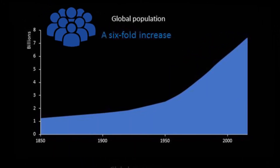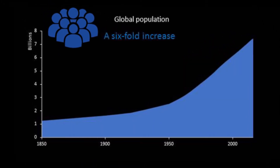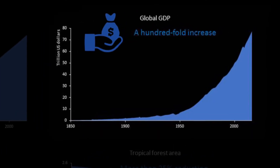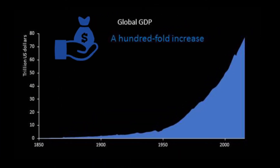If we look at human population over the last 150 years, it's increased about six-fold. As population has increased, society has developed and transformed in many countries of the world, and a metric we often use to describe that progress is GDP. We've seen that global GDP has increased about 100-fold over the last 150 years.